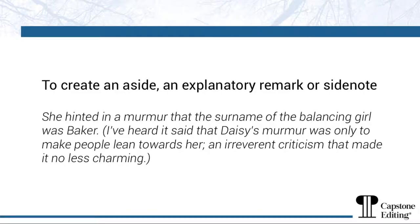In the following example taken from The Great Gatsby, F. Scott Fitzgerald has used parentheses so his narrator Nick can introduce a rumour about Daisy. This rumour is a relevant side note to the plot but doesn't progress the sequence of events, so for this reason it has been enclosed within parentheses. 'She hinted in a murmur that the surname of the balancing girl was Baker. (I've heard it said that Daisy's murmur was only to make people lean towards her — an irreverent criticism that made it no less charming.)'